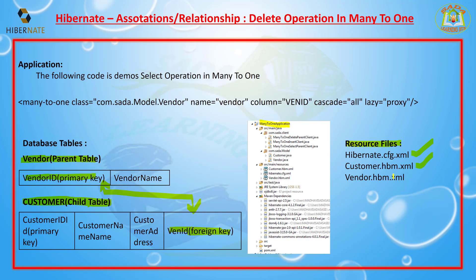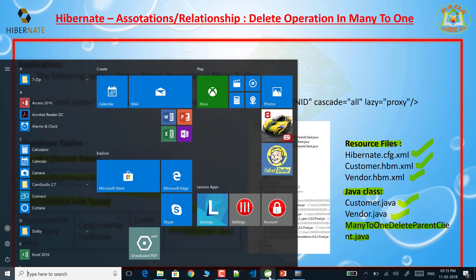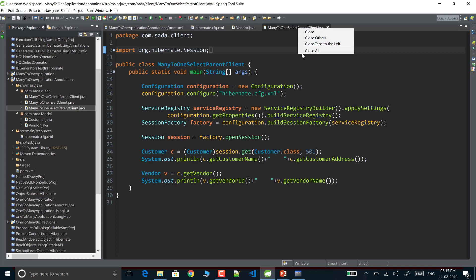Inside the project resources, I'm putting hibernate.cfg.xml, which holds connection properties, Hibernate properties, and mapping resource files. Next, the customer.hbm.xml is the Hibernate mapping file — it maps the customer table with the customer POJO class. The vendor.hbm.xml maps the vendor POJO class with the vendor table. I'm also creating three Java classes: Customer.java as the child POJO class, Vendor.java as the parent POJO class, and a client application called ManyToOneDeleteParentClient to test the application.